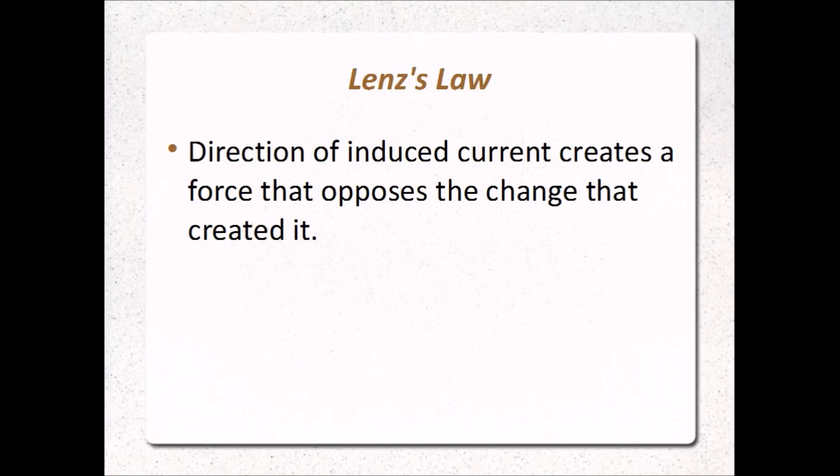Now we can look at Lenz's law in more detail. The law says that the direction of an induced current creates a force, which opposes the change that created it. If you push a magnet into a coil of wire, that induces a current, which creates a magnetic field around the wire, which in turn creates a magnetic force that opposes the movement of the magnet.